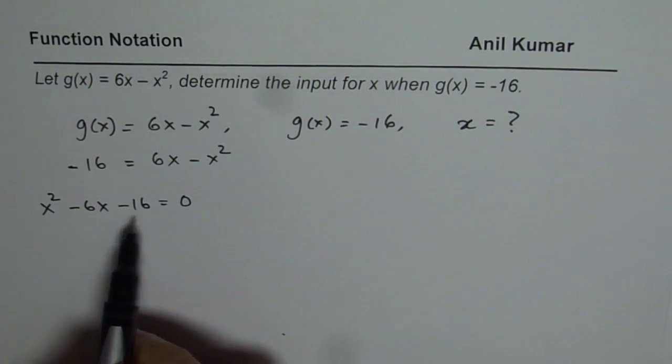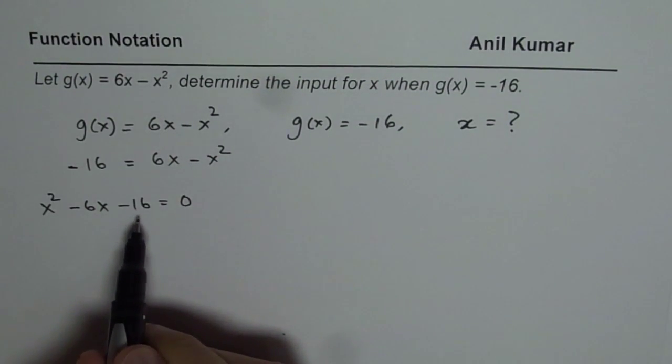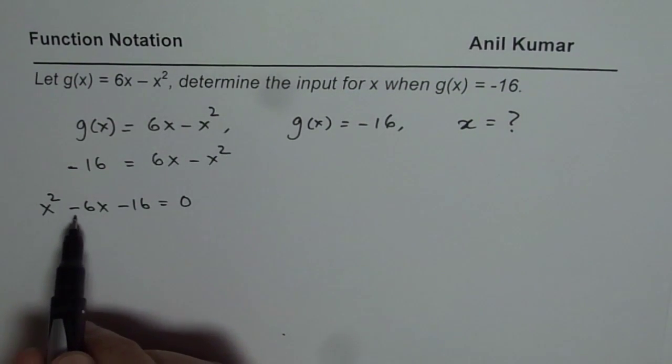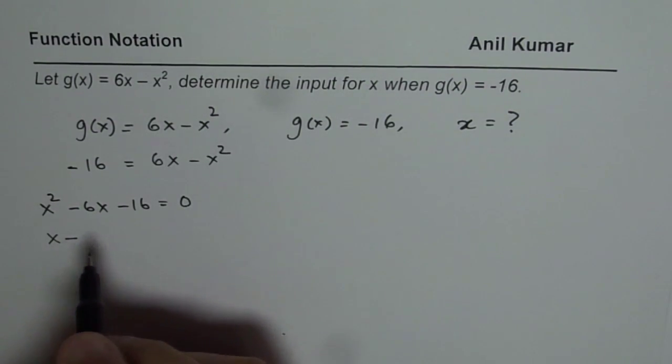Now, this could be factored. You could also use quadratic formula to find the answer at this stage. If you want to factor, you are looking for two numbers whose product is minus 16 and sum is minus 6. Those two numbers are minus 8 and 2.